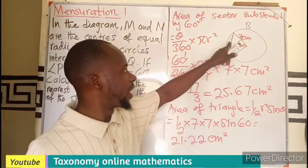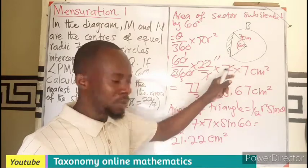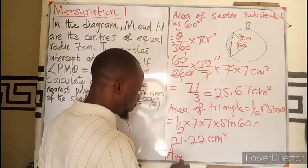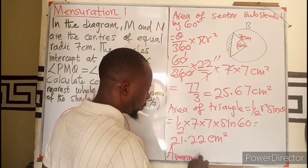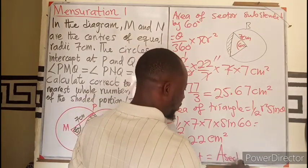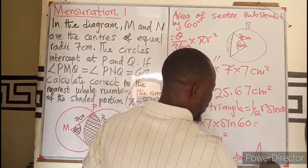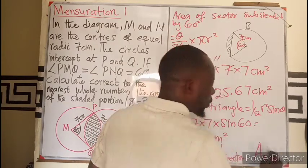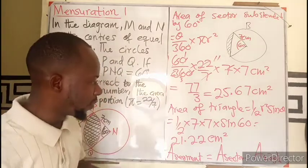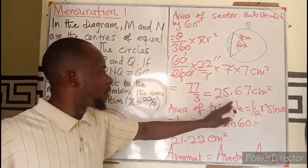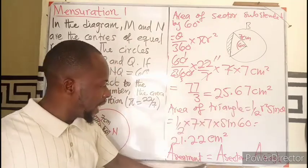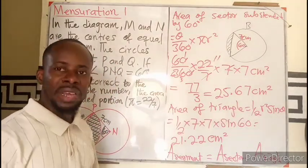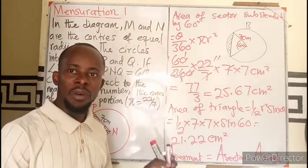We are looking for the area of the segment. We know area of a segment equals area of sector minus area of the triangle. We have the area of the sector, we have the area of the triangle.